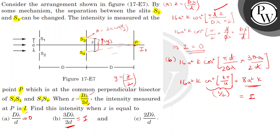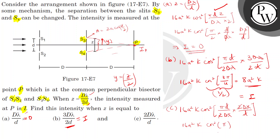For part C, we get 16A²K·cos²(π·D/(2·D·λ) × 2Dλ/d). Cancelling common terms, this equals 16A²K·cos²(π). Now cos(π) = −1, but since it's squared we get 16A²K. Since 8A²K equals I, this is 2 × 8A²K, which equals 2I. So the third answer is 2I.